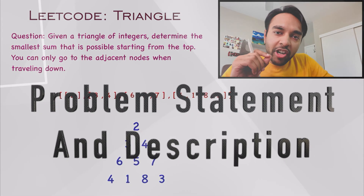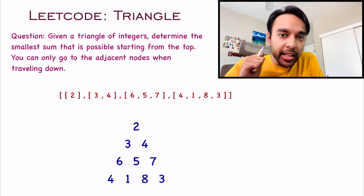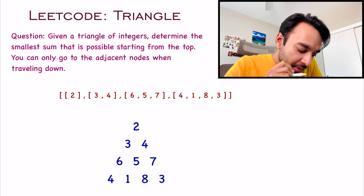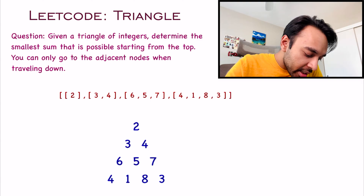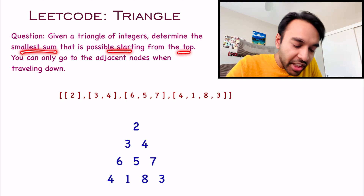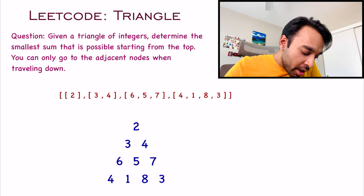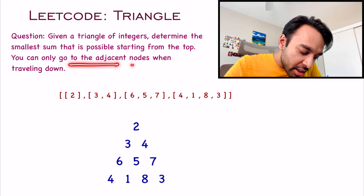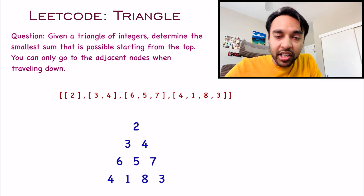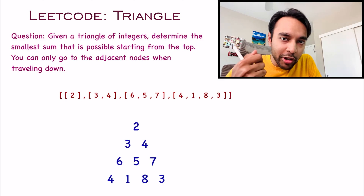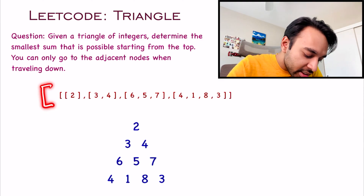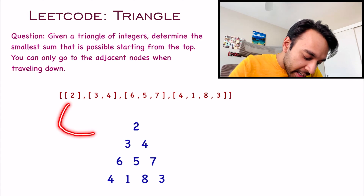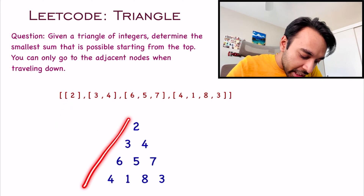Let us quickly make sure that we are understanding the problem statement correctly. In this problem, you are given a triangle of integers, and you have to determine the smallest sum possible starting from the top. There is one condition though — you can only go to the adjacent nodes when travelling in the downward direction. A triangle is given in the form of a list, and when you expand this list, your triangle will look something like this.